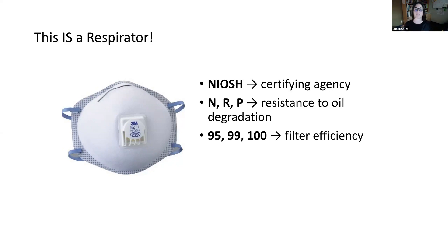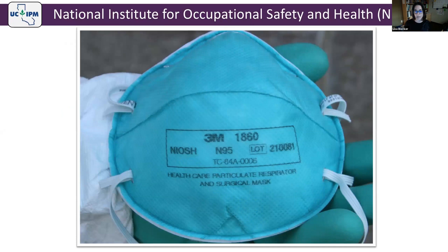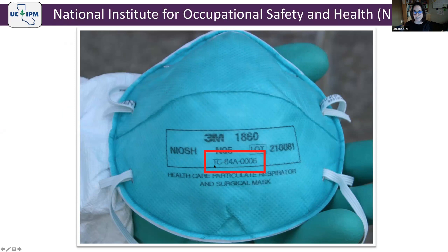N means not resistant to oil, R means somewhat resistant to oil, and P means mostly oil-proof. There will be a letter code and then a number indicating filter efficiency — 95, 99, or 100. There's not a huge difference between 95 and 100, but there is a big difference between N, R, and P. Many respirators also have a TC code — TC means 'tested and certified' by NIOSH. For example, TC-84A is the code for filtering face pieces.